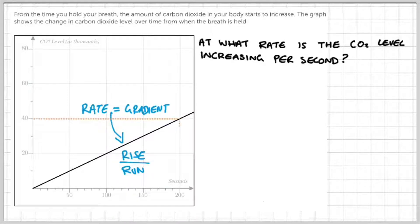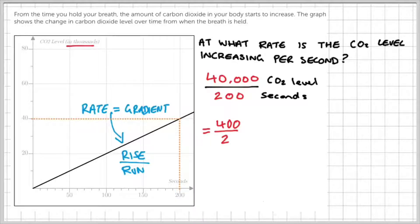Now by choosing a suitable point on the graph, we can find the rise over the run. Here you can see that we have a rise from 0 to 40 and we have a run from 0 to 200. Now be careful to pay close attention to the axis labels because here it says CO2 levels in thousands. So we have 40,000 divided by 200. That's going to simplify to 400 over 2, which is going to give us 200 carbon dioxide levels per second.